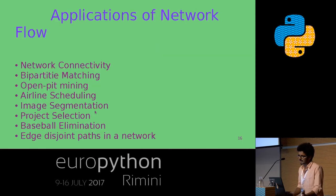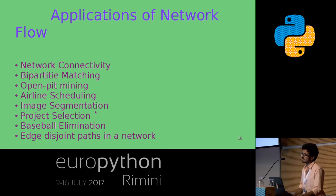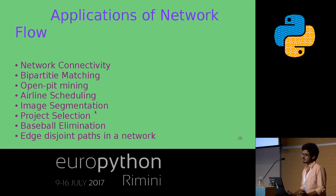Network flows are used in network connectivity, bipartite matching, and airlines use them to find the minimum number of planes needed to serve all their flights. They are used in image segmentation to separate the background or foreground of an image, in project selection which we will discuss, and in baseball elimination to eliminate teams that have no chance of advancing.